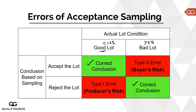Errors occur when you had a good lot with less than 1.5% defectives but you rejected it. That lot goes back to the producer — this is called producer's risk, or Type 1 error. On the other hand, if the lot was bad with more than 5% defectives, but you happened to pick good samples and accepted it, the buyer has now purchased a defective lot. This is called buyer's risk, or Type 2 error.